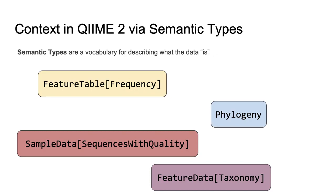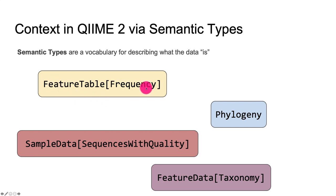So when we talk about, for example, a phylogenetic tree, we're not talking about some physical tree sitting in someone's garden with labels about various species. We're talking about the concept of a phylogenetic tree — it's not something you can hold in your hand, but it is a concrete conceptual idea. With these semantic types, the idea is that it's a language in which we can talk about different types of microbiome bioinformatics data. I've got a few boxes on my screen representing common types of semantic types within a QIIME 2 environment.